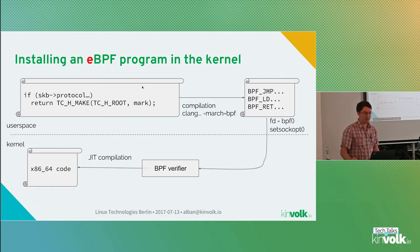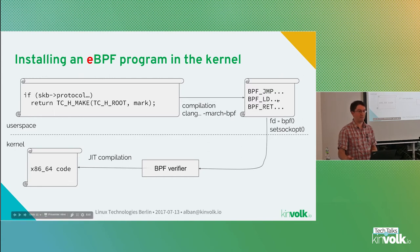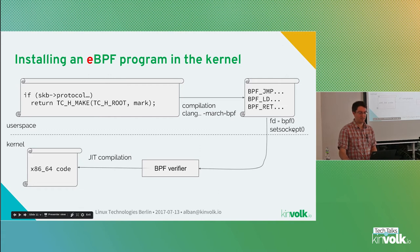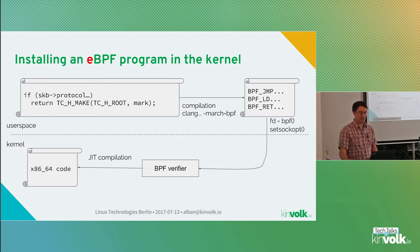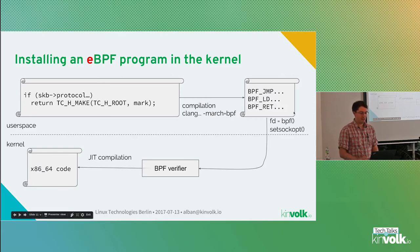With eBPF it's a bit different. You can see code written in C, which is much easier to write than bytecode directly. You write something in a subset of the C language, then compile it with Clang targeting the BPF architecture to get that bytecode. A program then calls the BPF system call to get a file descriptor for that, and uses setsockopt to attach it to the socket and send it to the kernel. There is also another component — the BPF verifier — which checks that the program is sane and doesn't do anything bad.